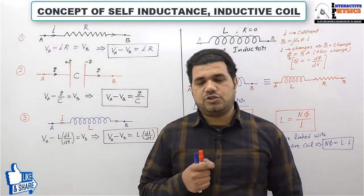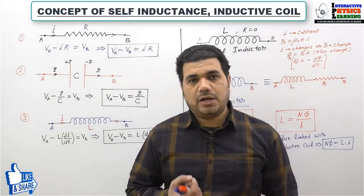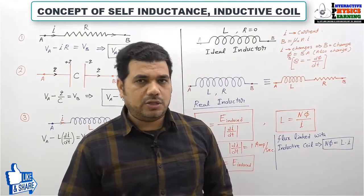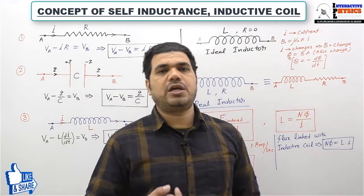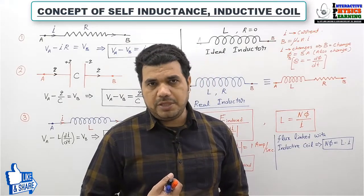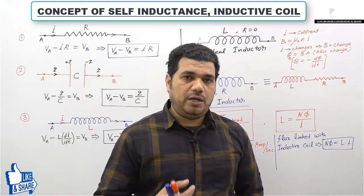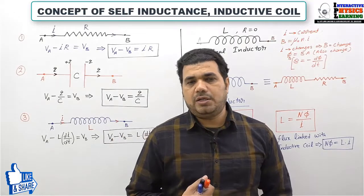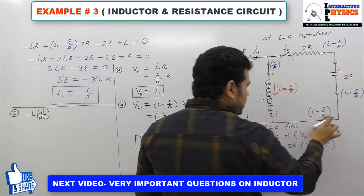If there is a change in magnetic flux linked with any coil, then there is an induced EMF generated. If the induced EMF is generated and the coil is in a closed loop, then the circuit behaves as follows.